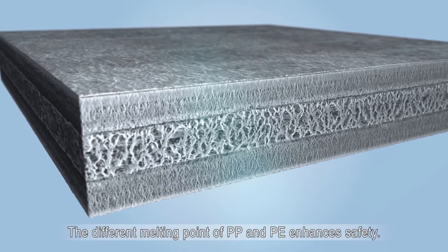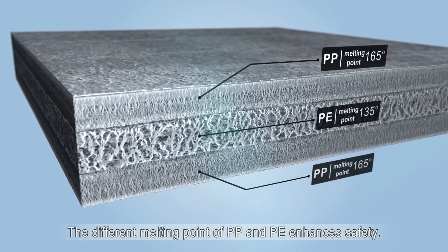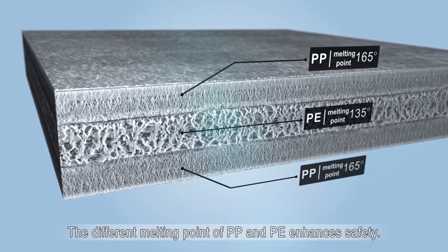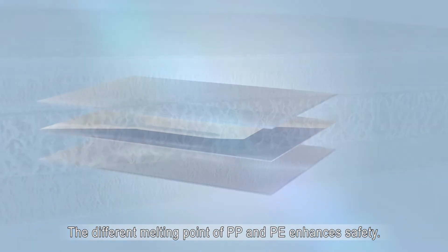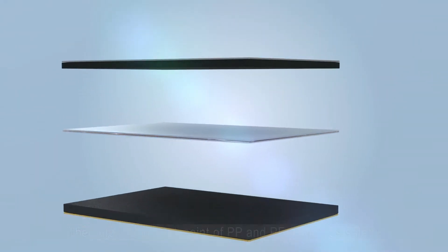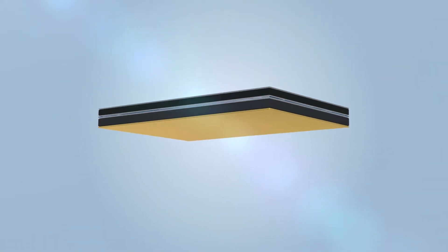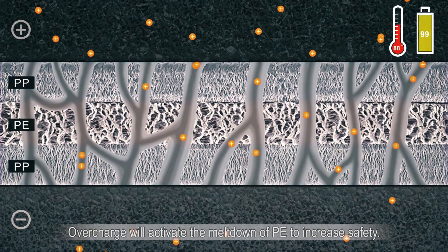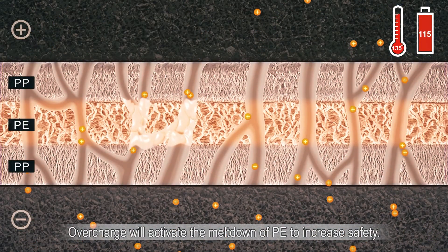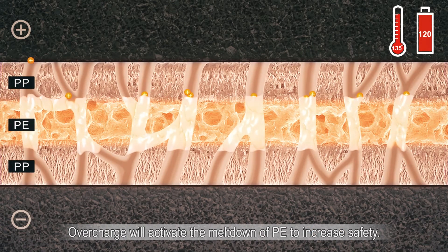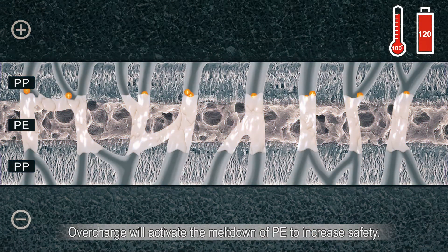BenQ materials multi-layer separator takes advantage of the different melting point of polypropylene and polyethylene to enhance its safety. When the battery is overcharged, the polyethylene will melt to block the transmission of ions, so that the battery safety can be highly increased.